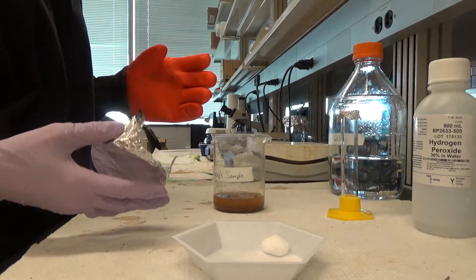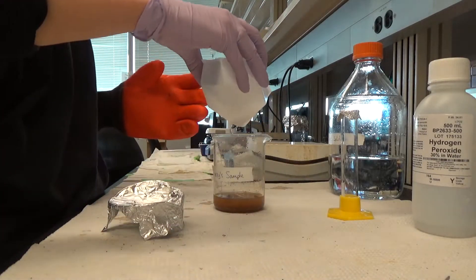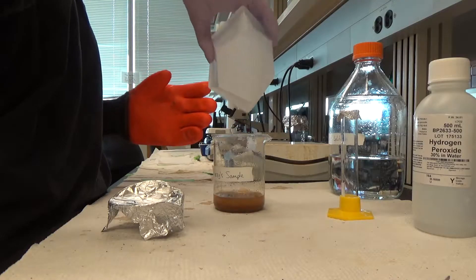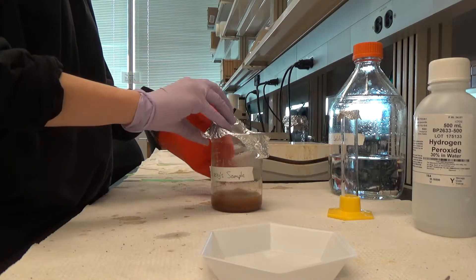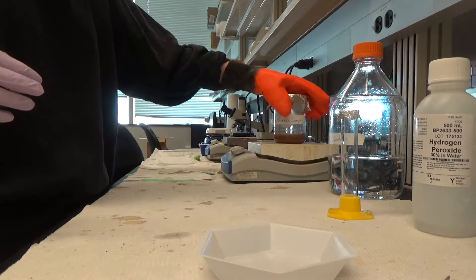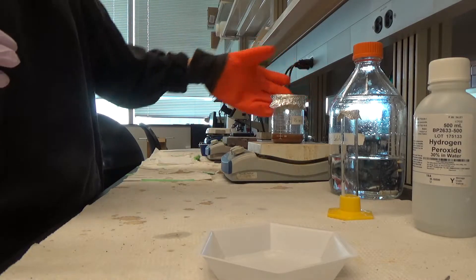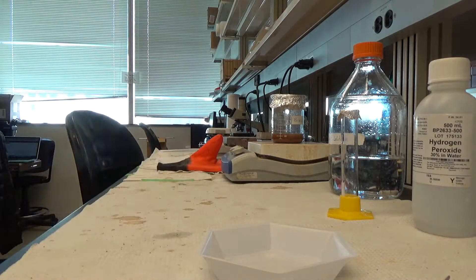For every 20 milliliters of the total volume of your sample, add 6 grams of salt. Only count the liquid portion of your sample. Heat this mixture until all of the salt dissolves, which takes about 20 to 30 minutes.